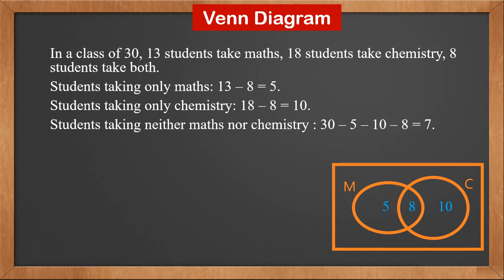Students taking neither math nor chemistry is 30 minus 5 minus 10 minus 8, which is 7. We mark 7 outside M and C. All these numbers add up to 30, which is the sample space.